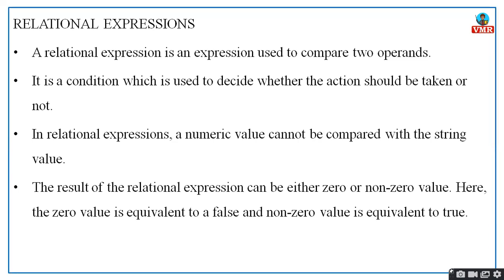The result of a relational expression can be either 0 or a non-zero value. The 0 value is equivalent to false and the non-zero value is equivalent to true. If 3 is greater than 4, you get either yes or no — true or false. It will have only zero and non-zero values: if 0, it is false; if 1, it is true.